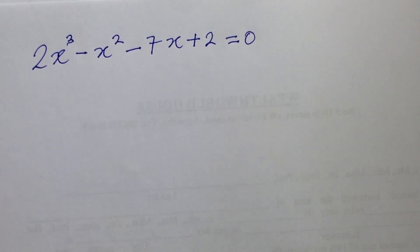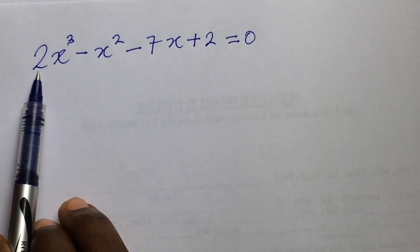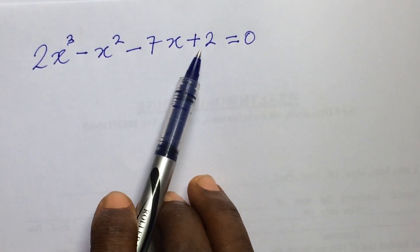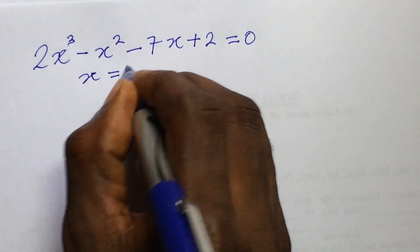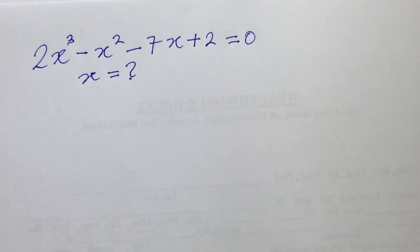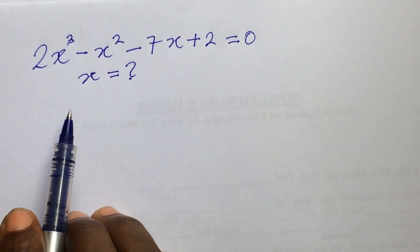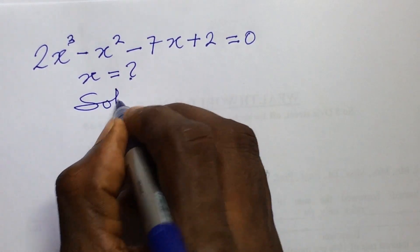Welcome once again to Online Maths TV. My name is Remise Jakes. Today we have a third-degree polynomial equation. The question says: 2x³ - x² - 7x + 2 = 0. What will be the value of x? From this polynomial equation, we have to solve for three zeros.